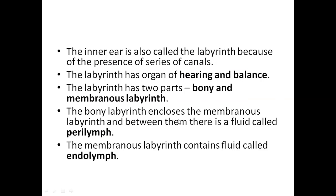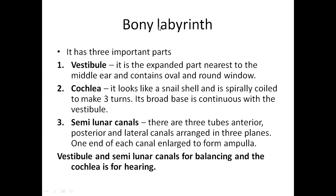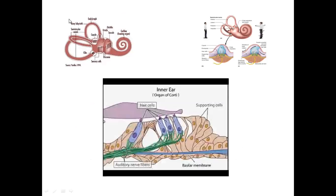Between the bony labyrinth and the membranous labyrinth there is perilymph, and inside the membranous labyrinth there is endolymph. The bony labyrinth of the internal ear has three important parts: the vestibule, the cochlea, and the semicircular canals. The vestibule and semicircular canals help in balancing, while the cochlea helps in hearing.